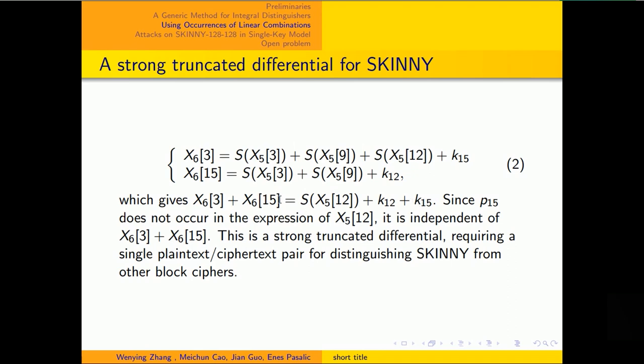That is, this sum is dependent on X5[12]. And since P15 doesn't occur in the expression of X5[12], it is independent of the linear combination of the two words. This is a strong truncated differential requiring a single plaintext-ciphertext pair for distinguishing SKINNY from other block ciphers.